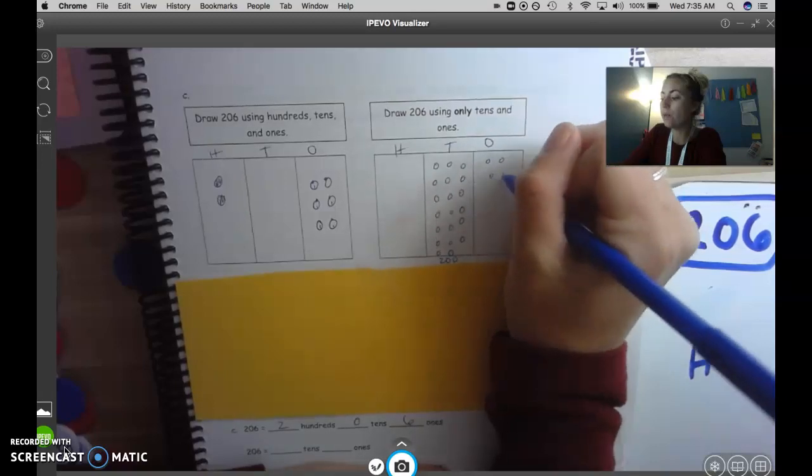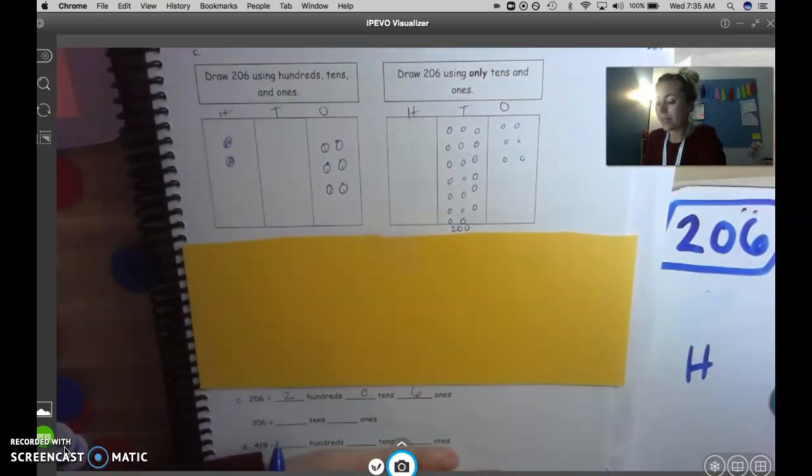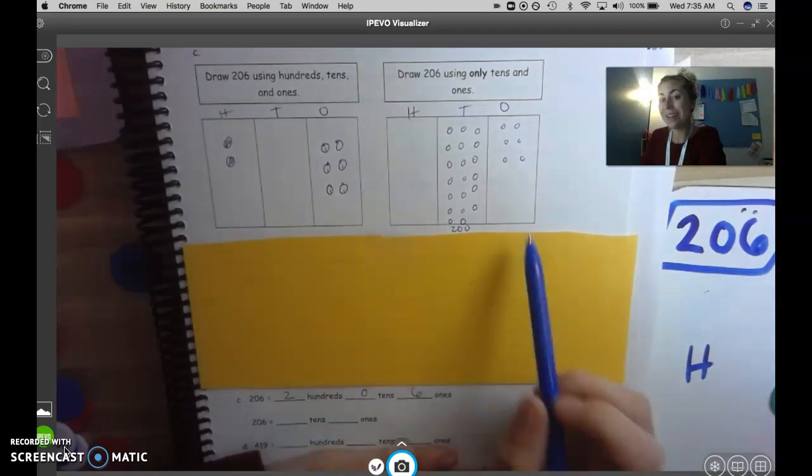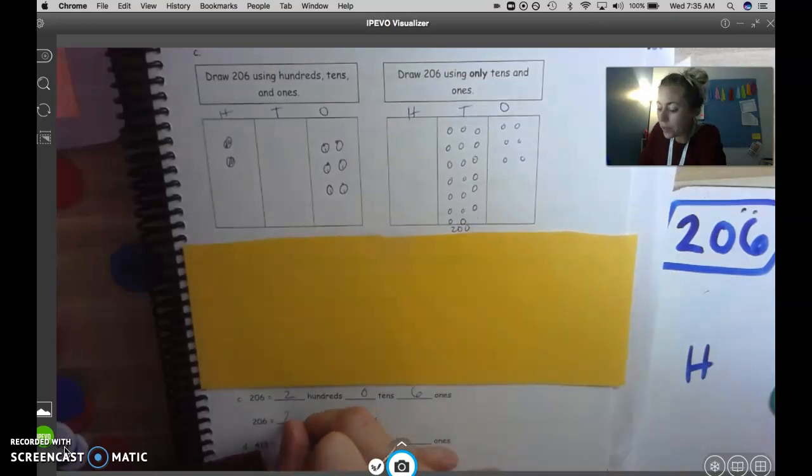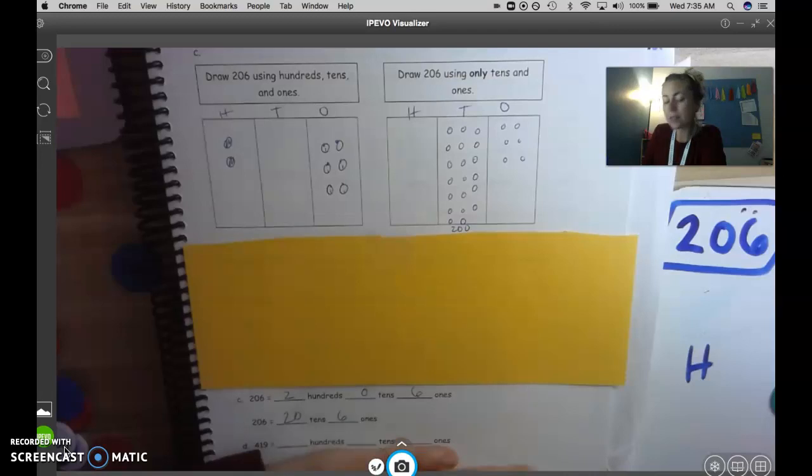Which is the same as 200 and then 6 ones. 1, 2, 3, 4, 5, 6. Now when it says how many tens I have, I can count that and say I have 20 tens and 6 ones.